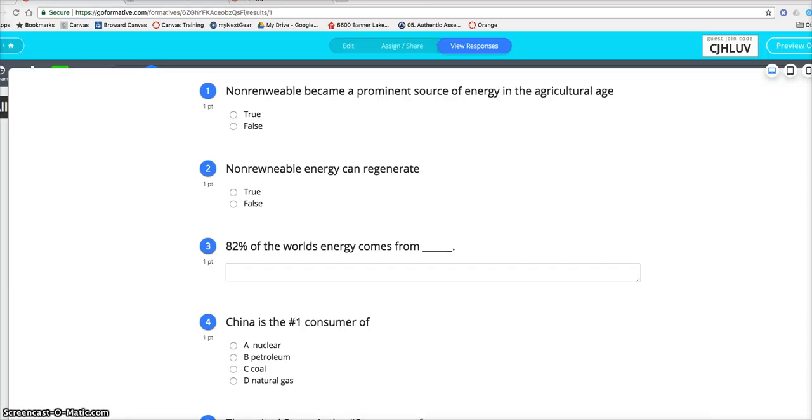So non-renewable became prominent when? Industrial. When in hunter-gatherers, what kind of energy? Renewable, because the sun was their main source of energy. Hunter-gatherers.